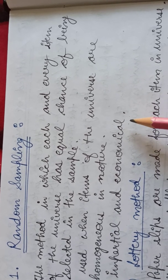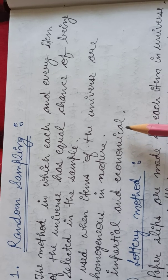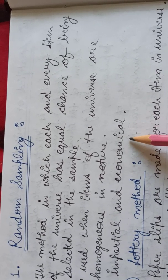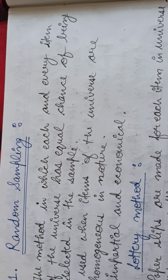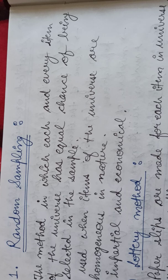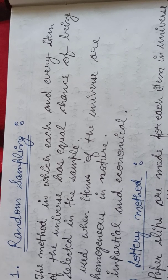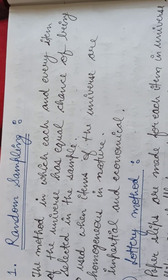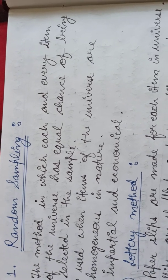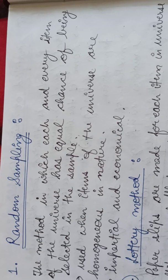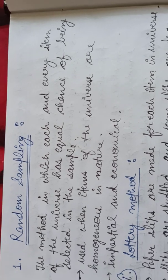For example, if in a class of 50 students I need to take out 5 samples, I will simply take out 5 students from the class without judging their characteristics — that is random sampling. Under random sampling, there are two methods: the lottery method and the tables of random numbers method.